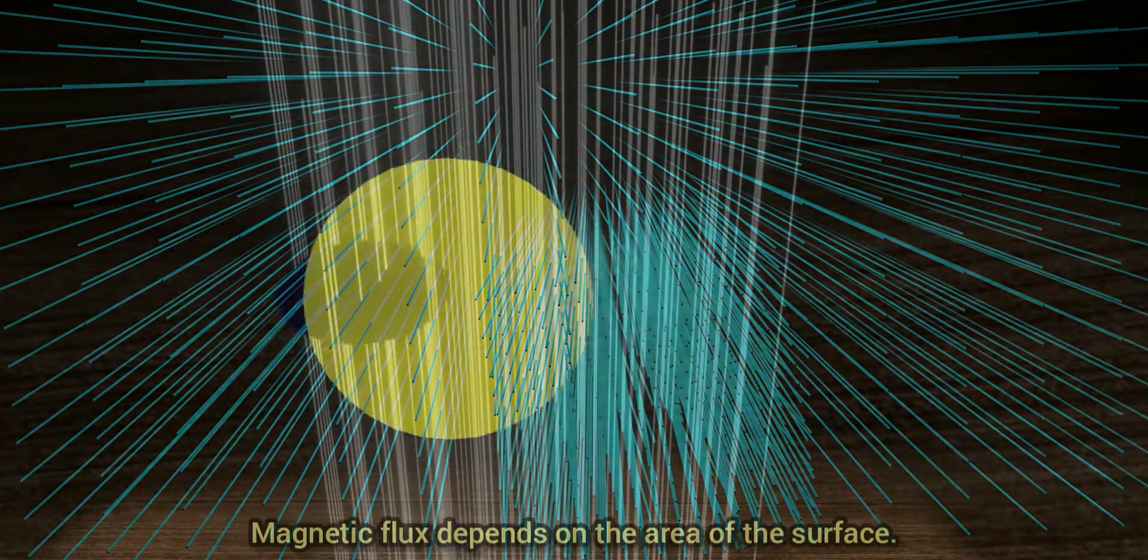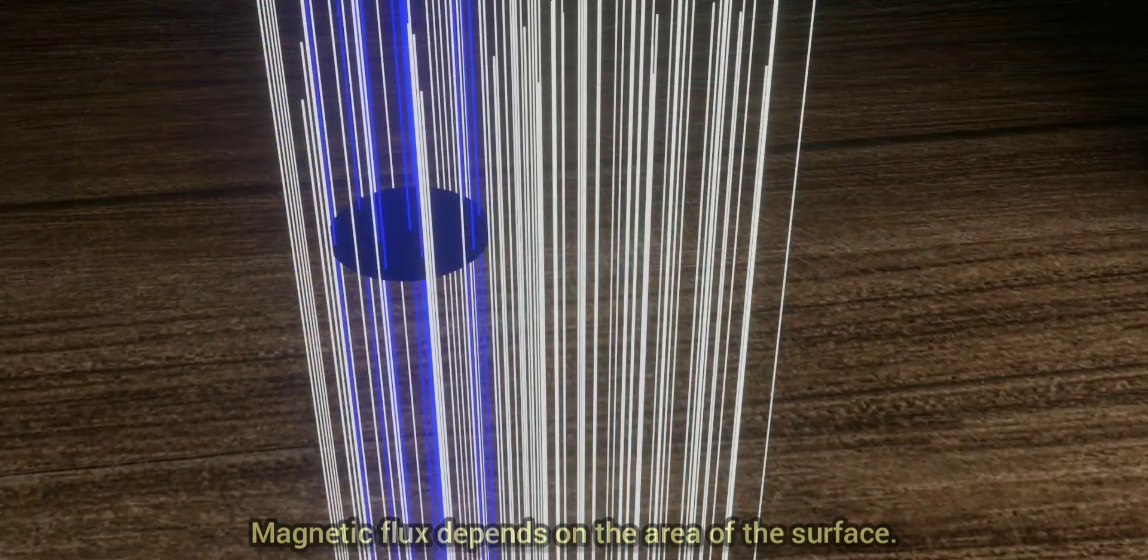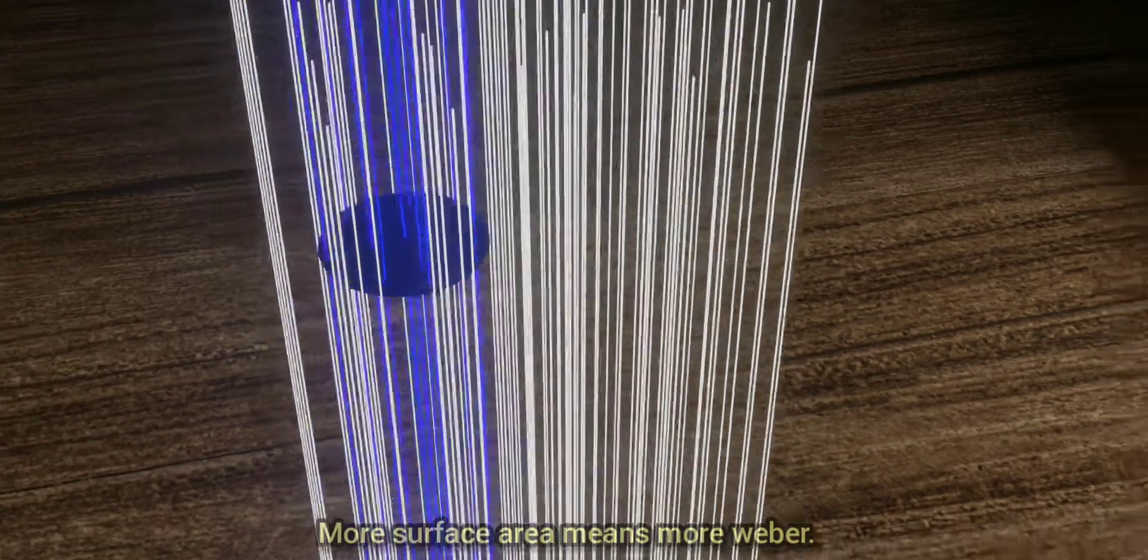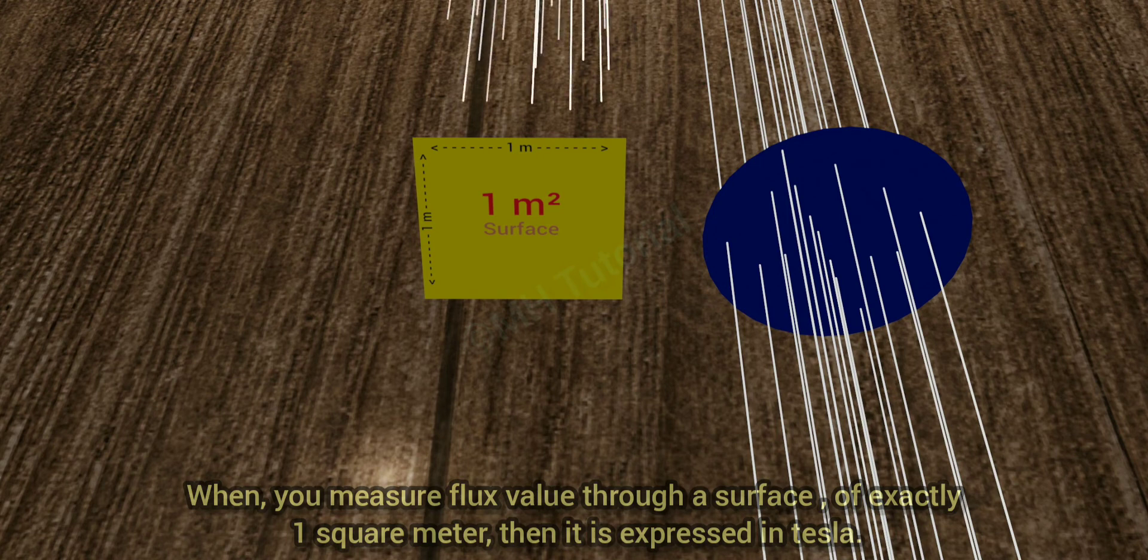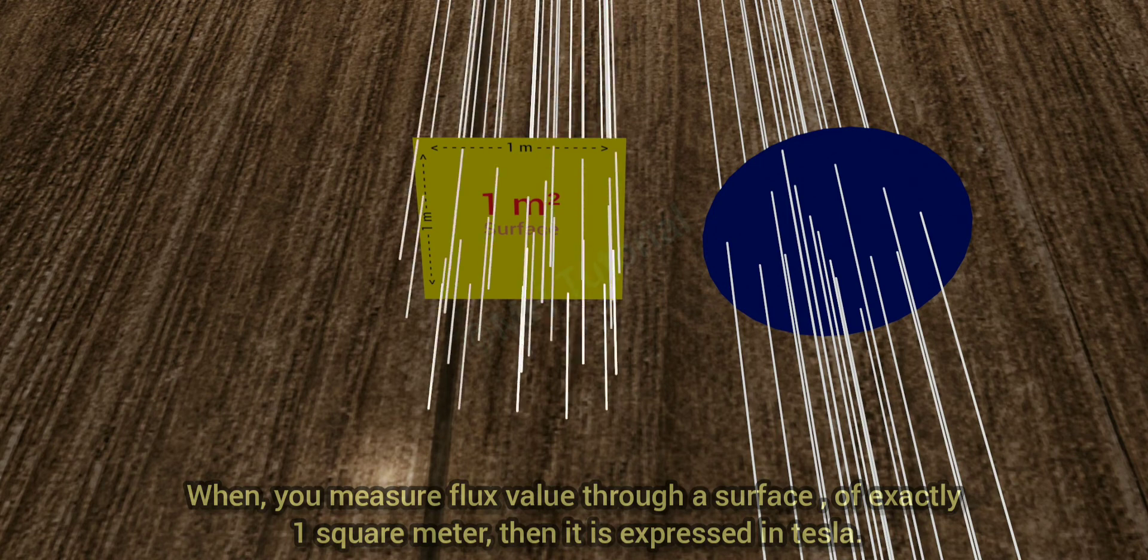Magnetic flux depends on the area of the surface. More surface area means more Weber. When you measure flux value through a surface of exactly one square meter, then it is expressed in Tesla.